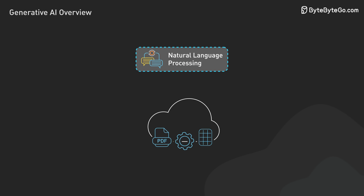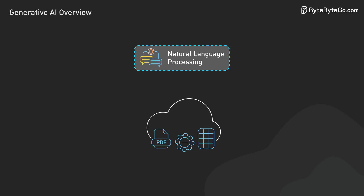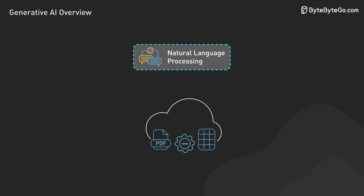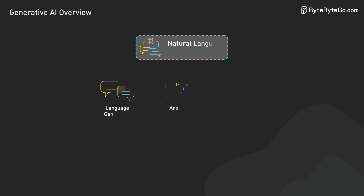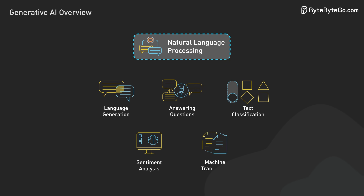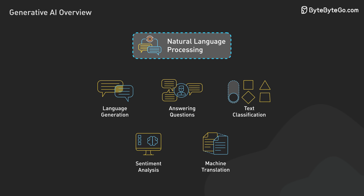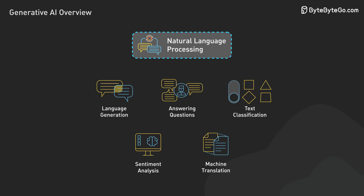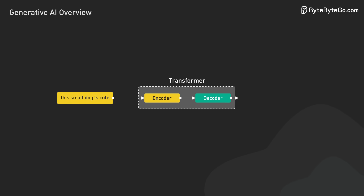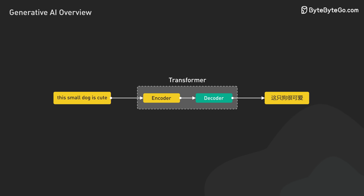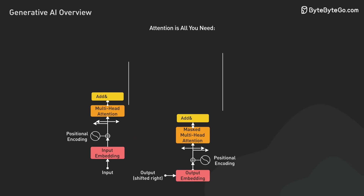NLP, or natural language processing, is a subfield of AI that focuses on enabling computers to understand, interpret, and generate human language. It involves tasks such as text classification, sentiment analysis, machine translation, and text generation. Deep learning models, particularly transformer models, have revolutionized NLP in recent years.